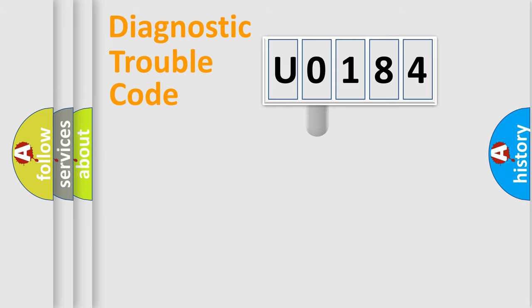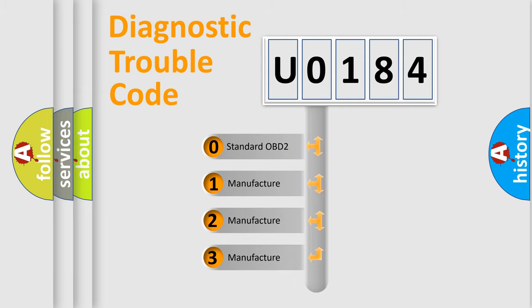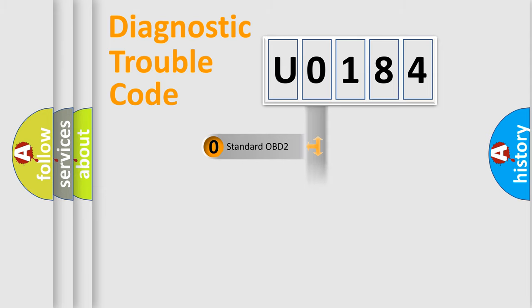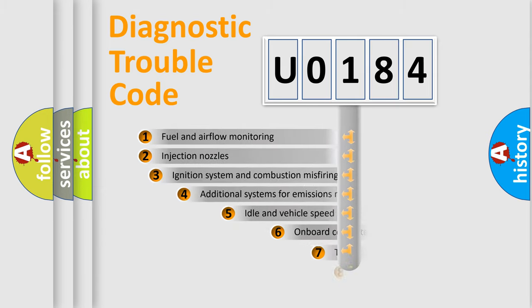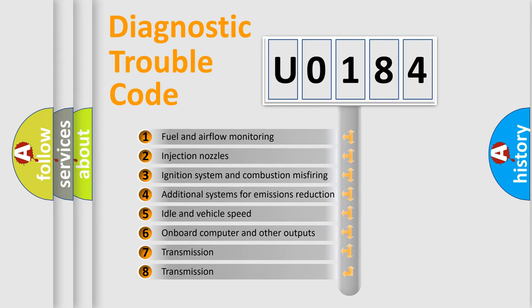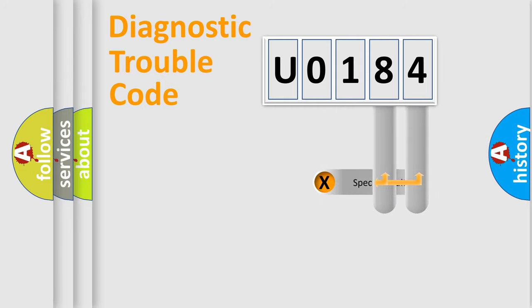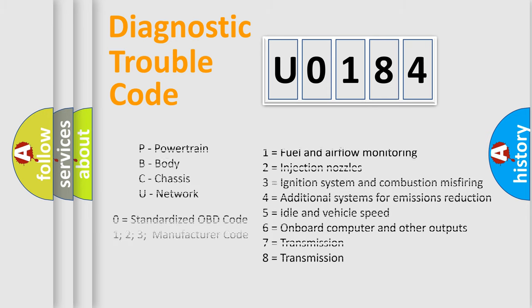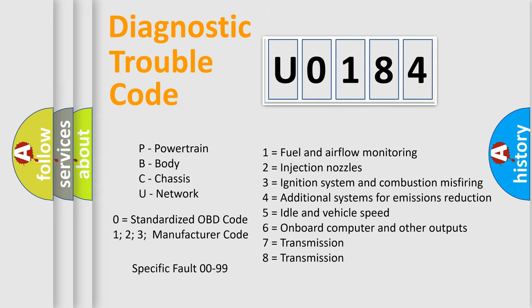This distribution is defined in the first character of the code. If the second character is expressed as zero, it is a standardized error. In the case of numbers 1, 2, or 3, it is a more specific car-manufacturer error. The third character specifies a subset of errors. This distribution is valid only for the standardized DTC code, and only the last two characters define the specific fault of the group.